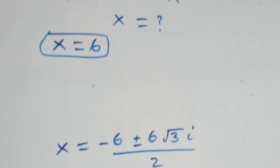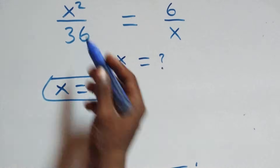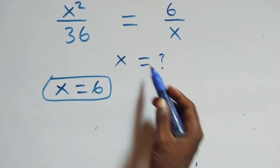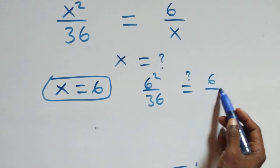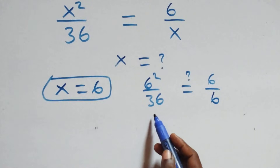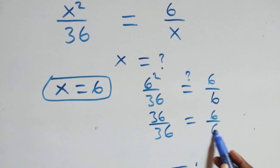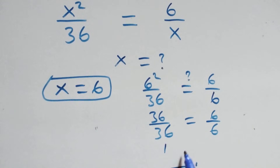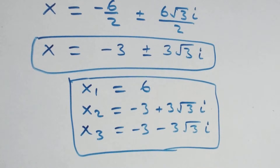We can check if x equals 6 satisfies the original problem. Substituting: 6 squared over 36 equals 6 over 6, which gives 1 equals 1. Left hand side equals right hand side, so x equals 6 satisfies the equation. In the same way, the other two complex solutions can be verified.